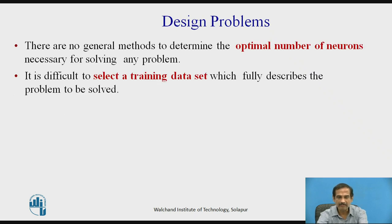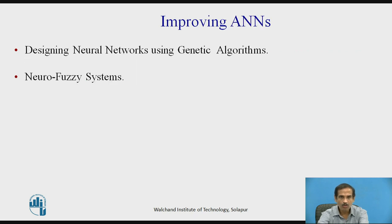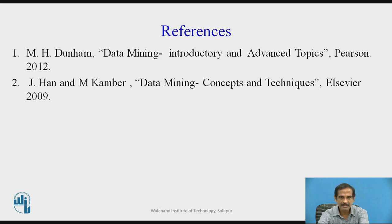However, design problems are some bottlenecks. There are no general methods to determine the optimal number of neurons necessary to solve a problem, and it is difficult to select the training data set which fully describes the problem. ANNs can be improved by using optimized algorithms like genetic algorithms and neuro-fuzzy systems. For references, we have used Dunham and Camber. Thank you.